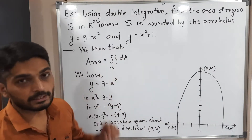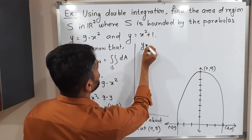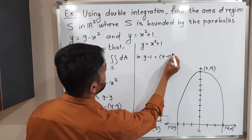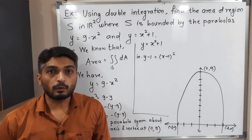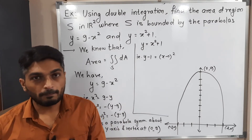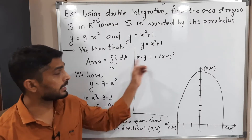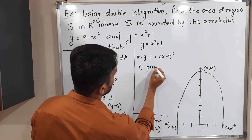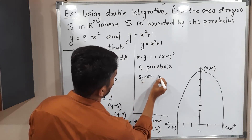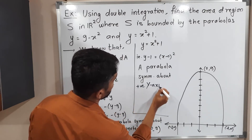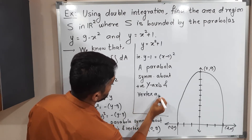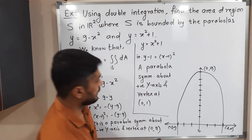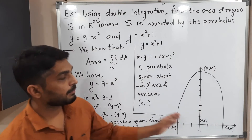Now for the second equation: y = x squared plus 1. Writing it in standard form: y minus 1 = x squared, or (x minus 0) squared = y minus 1. The power of y is 1 and the power of x is 2, so it is a parabola again. Since y has a plus sign, the parabola is symmetric about the positive y-axis with vertex at (0, 1).